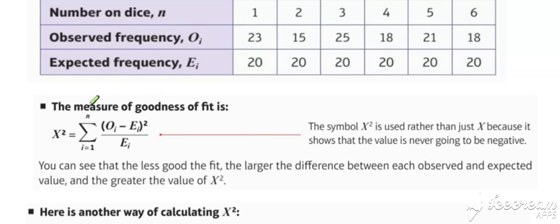The measure of goodness of fit is defined as follows: we measure the goodness of fit by considering the difference between the observed and the expected. We square to ensure that difference is turned positive, and then we divide by the expected, and we sum up that for however number of comparisons that we're making. We use the symbol X squared rather than X just to indicate that it's never going to be negative. So this is our goodness of fit calculation.